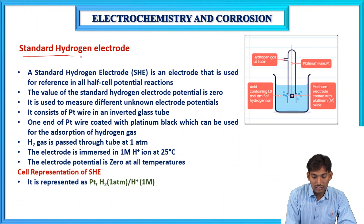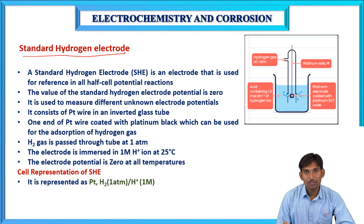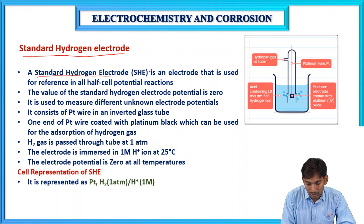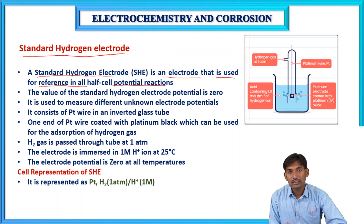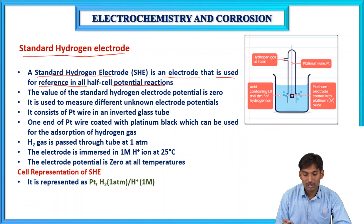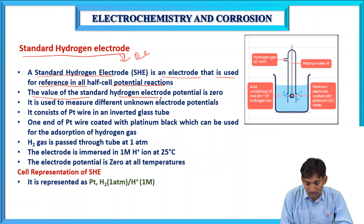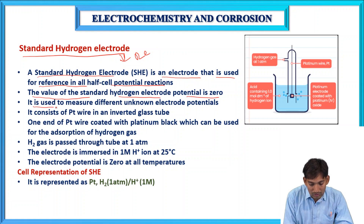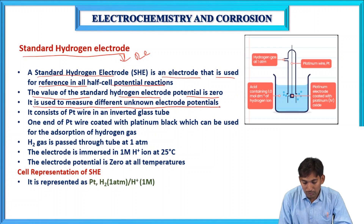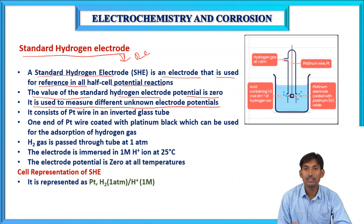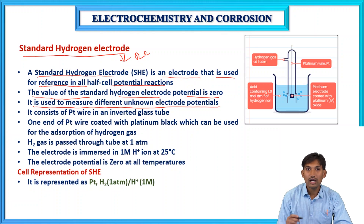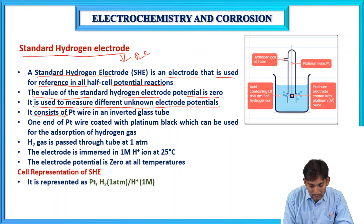Standard hydrogen electrode is a primary reference electrode. It is an electrode used for referencing cell potential reactions. Its potential value is zero, making it easy to measure different unknown electrode potentials. It consists of a platinum wire in an inverted glass tube.